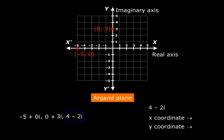Similarly for the complex number 4 minus 2i, we need to plot the point 4 comma minus 2. There it is.